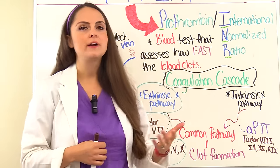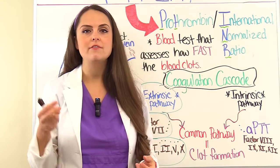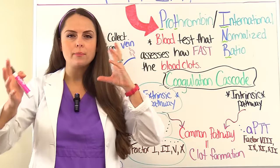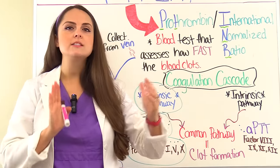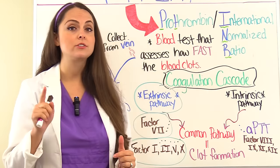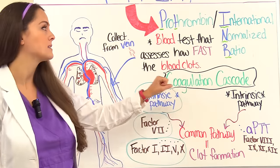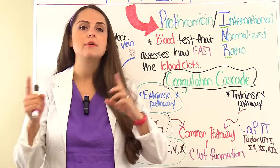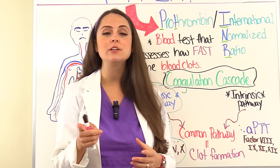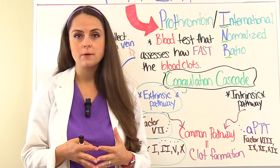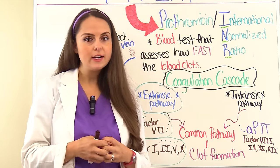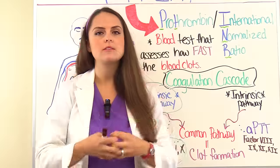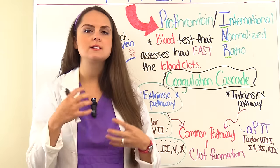Prothrombin is clotting factor 2. The prefix 'pro' means before proceeding. What prothrombin is going to do is turn into thrombin with the help of factor 5 in the coagulation cascade. Whenever thrombin is on board, it's really going to get things going, because it's going to help turn fibrinogen into fibrin. Fibrin is really that main ingredient that helps the clot form, because it's a mesh-like substance that causes things to stick to it, so the clot will be nice and formed and help prevent excessive bleeding.